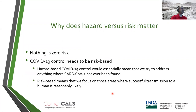Why does it matter? It matters because nothing is zero risk. With COVID-19 being so common during the pandemic and found in so many different places, one cannot manage the hazard. One needs to focus on the areas of highest risk. COVID-19 control needs to be risk-based, as a hazard-based control would mean addressing anything where SARS-CoV-2 is found. Risk-based means focusing on areas where transmission to a human is reasonably likely and where the highest risk of human disease occurs.